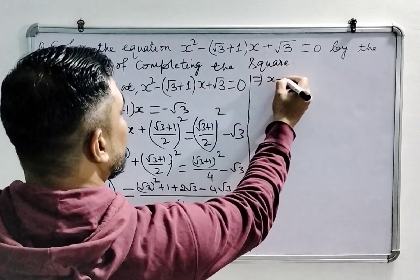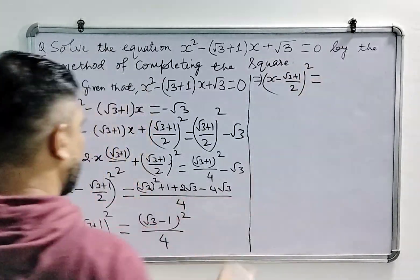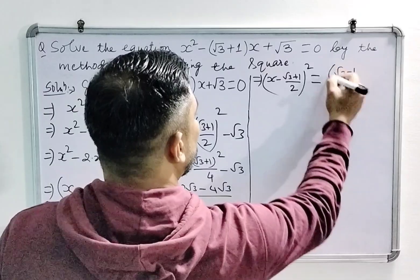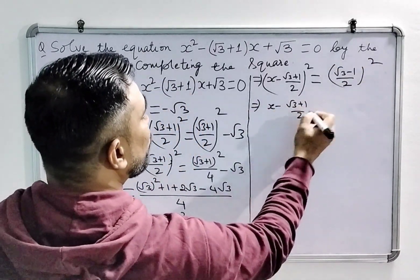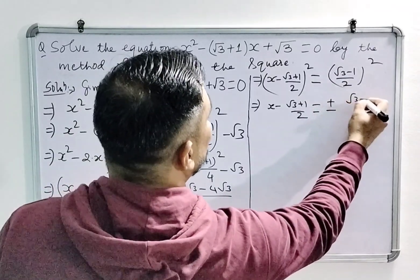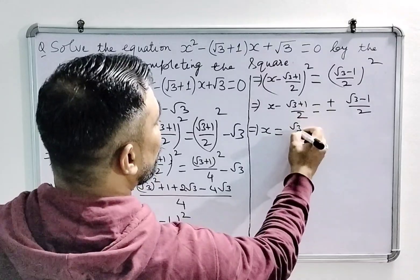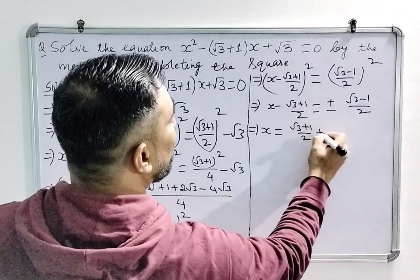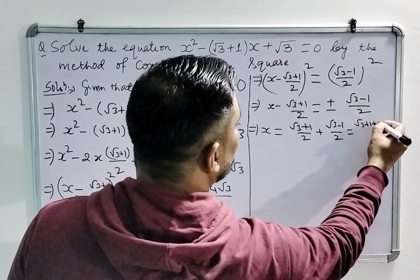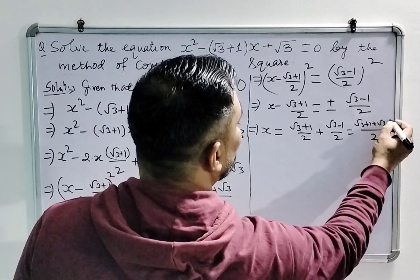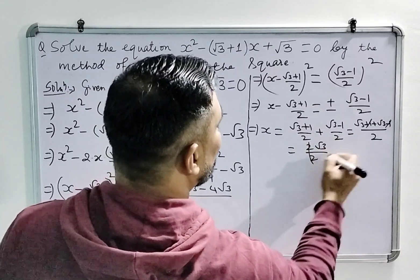So x minus (√3 + 1)/2, whole square, is equal to (√3 − 1)²/4. So x minus (√3 + 1)/2 will be equal to ±(√3 − 1)/2. So x will be equal to (√3 + 1)/2 plus (√3 − 1)/2, which gives 2√3/2, that is √3.